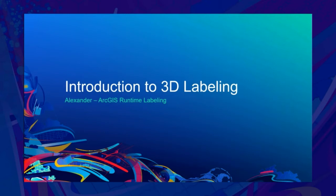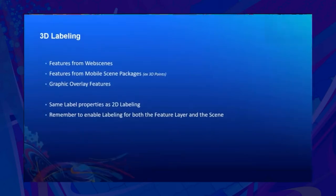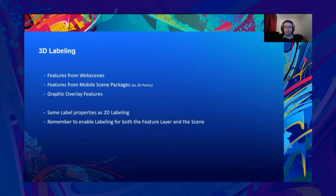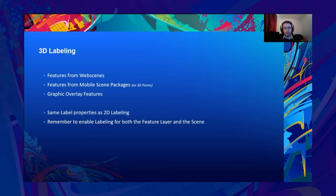3D labels are a recent addition to Runtime Core, having only been officially supported as of release 100.10. However, a considerable amount of functionality has already been implemented. 3D labels can be generated for features from web scenes, mobile scene packages, and you can label graphic overlay features created using Runtime Core as well. As of release 100.10, mobile scene packages exclude 3D points — labeling support for those will come in a subsequent release, but 2D points are still supported. These labels are defined using the exact same label definitions as you would use for 2D labeling, so there's no need to transform your label properties from a 2D format to a 3D one. Note that some labeling properties are not yet supported for 3D — if an unsupported label property is used in 3D, Runtime will just ignore it.